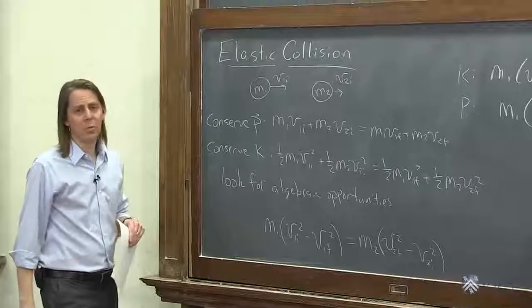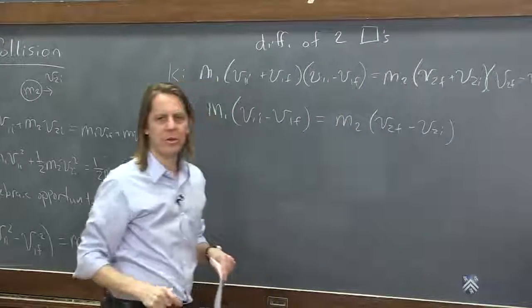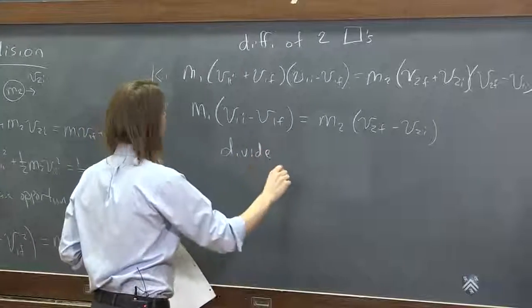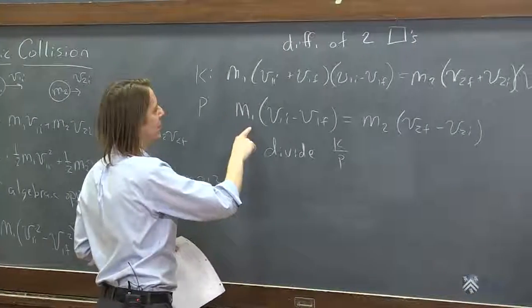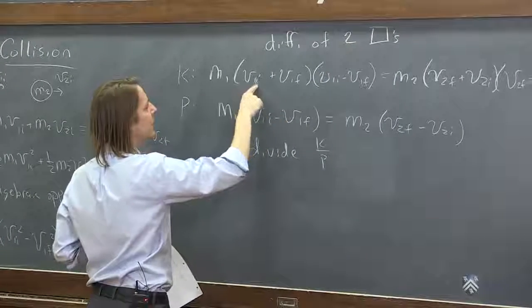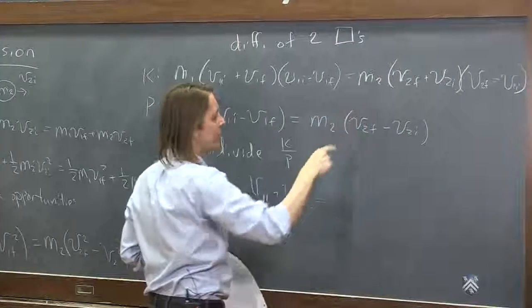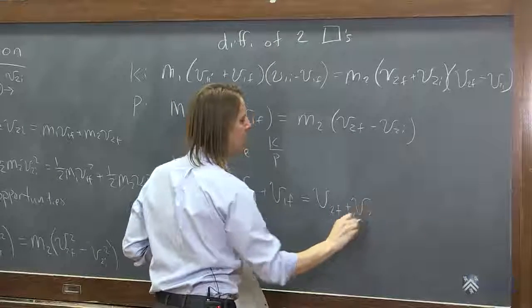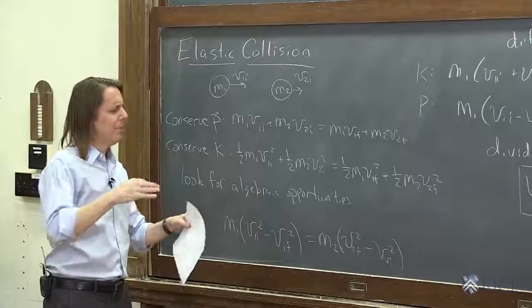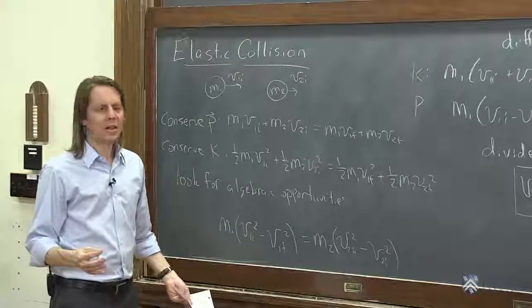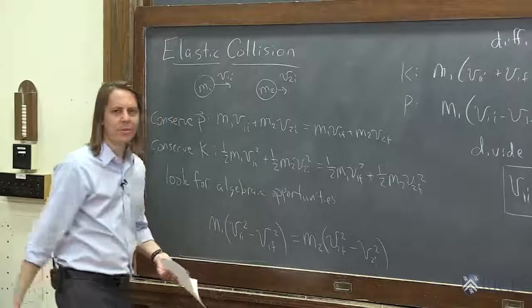Here's the part you probably wouldn't have thought to do: divide the two equations. If this equals this and that equals that, the ratio of one side equals the ratio of the other. Dividing K over P, the M1's cancel and the difference terms cancel on the left, leaving just V1i + V1f. On the right, the M2's cancel and the differences cancel, leaving V2f + V2i. That result is always true — it's just the algebraic consequence of combining the kinetic energy and momentum requirements to eliminate the squares.